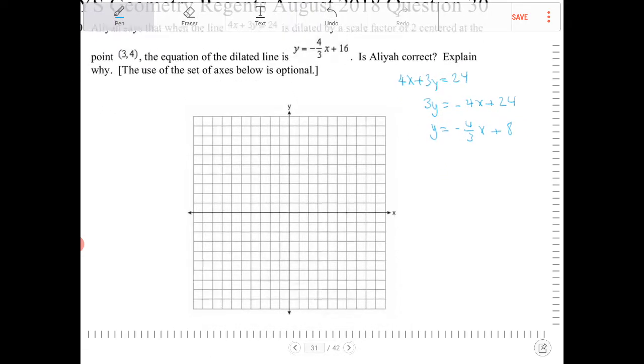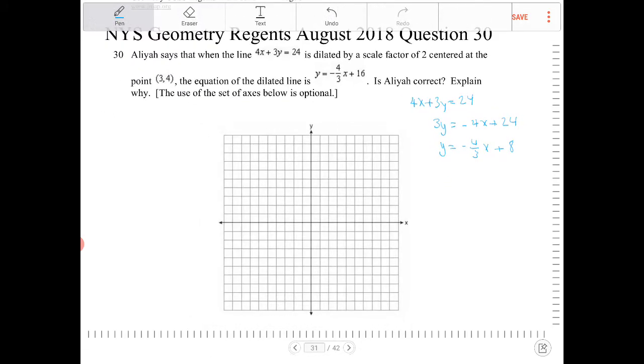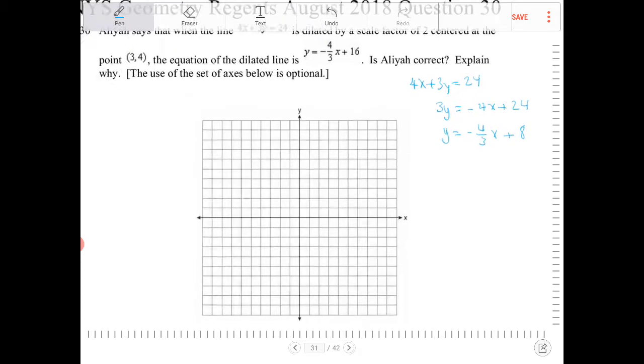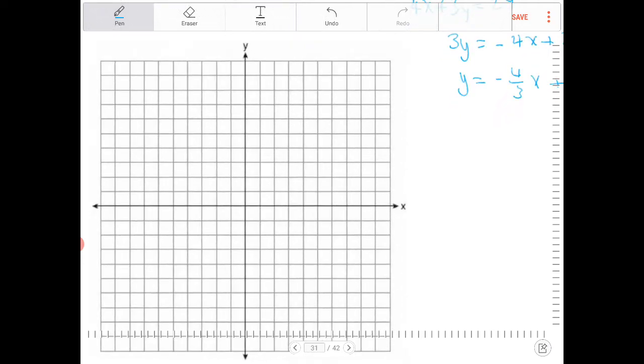So it's looking promising right now because when you dilate a line over some point, it doesn't matter where it is and it doesn't matter what the dilation factor is, the two lines are always going to be parallel. So I have negative 4 thirds x plus 8, so I'm going to graph that out.